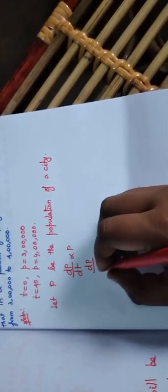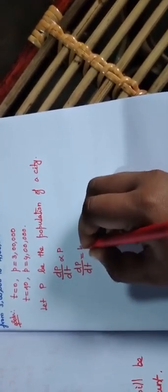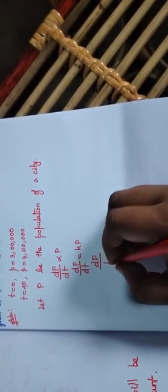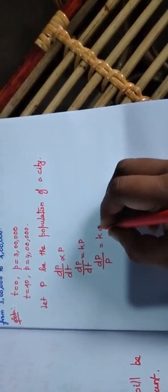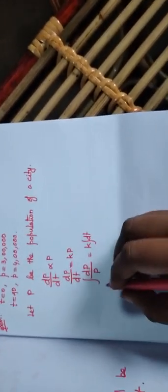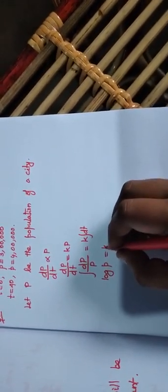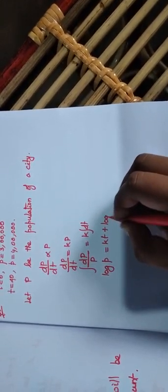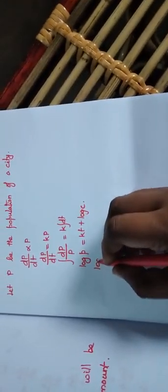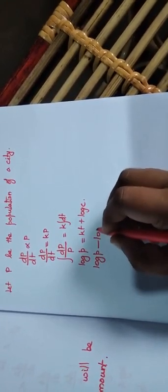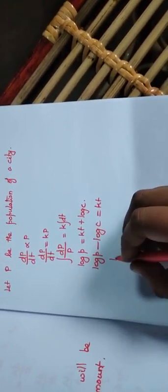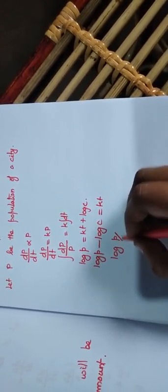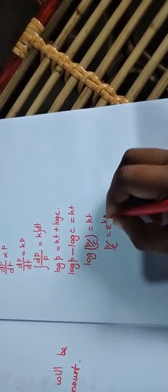Removing the proportionality constant, dp by dt is equal to kp. Separating the variable and integrating, log p is equal to kt plus log c. Bringing to one side: log p minus log c equals kt, which means log(p/c) equals kt. Bringing log to the other side, p by c equals e power kt, so p equals c·e power kt. That is the first statement.